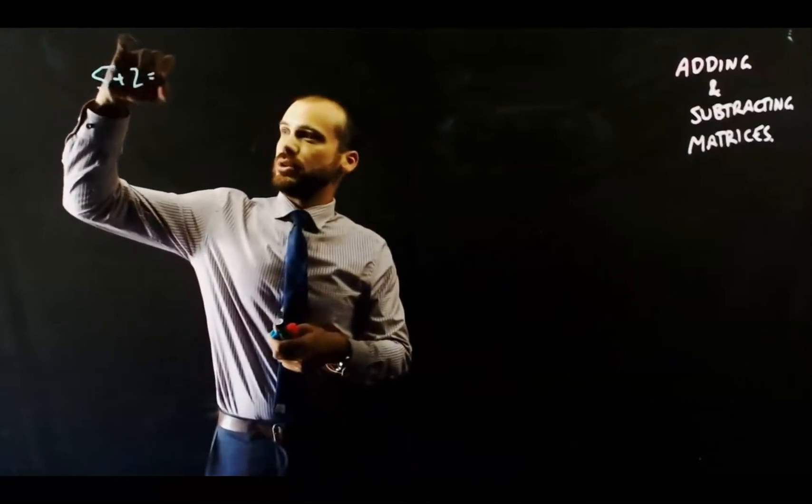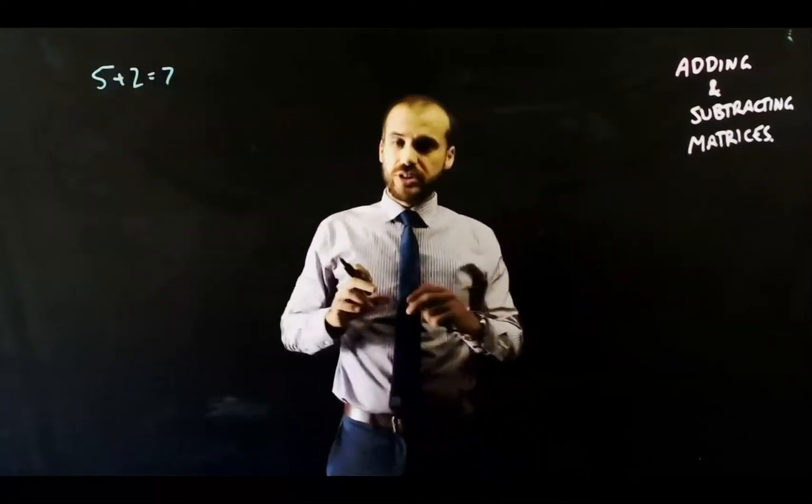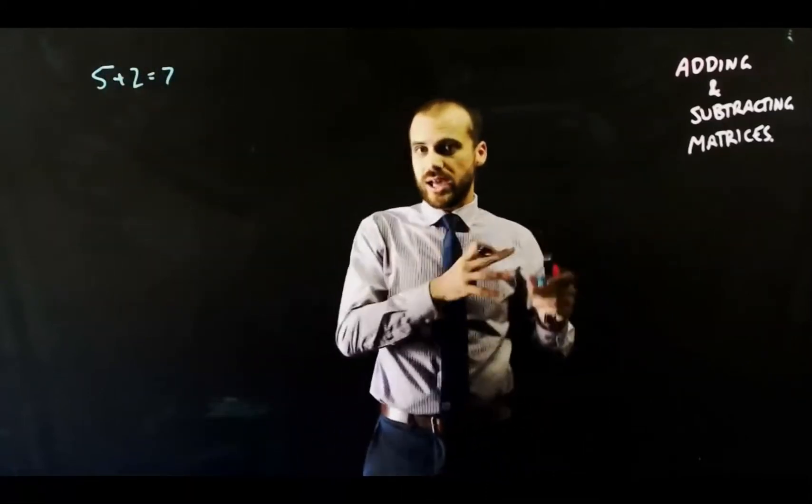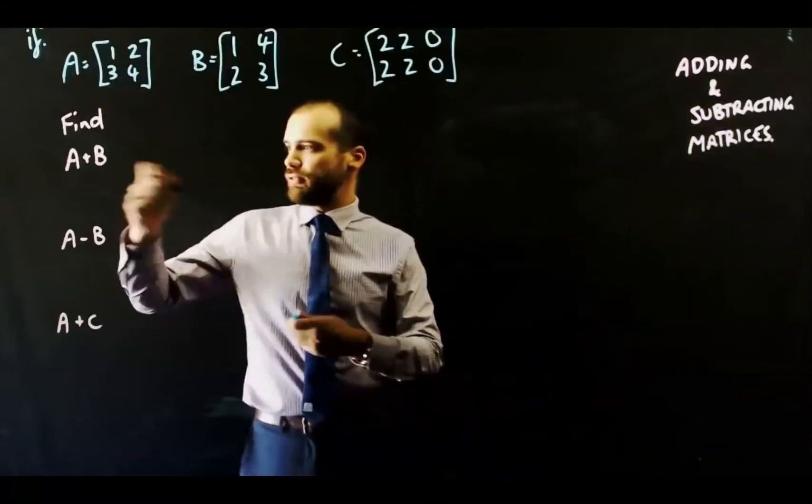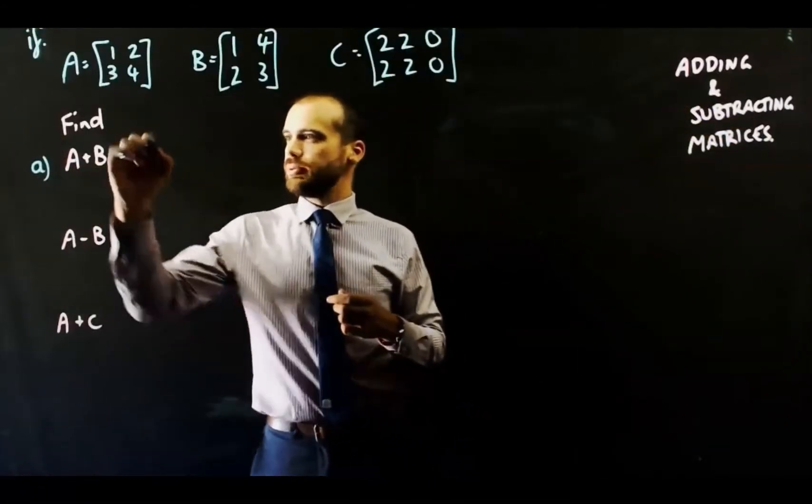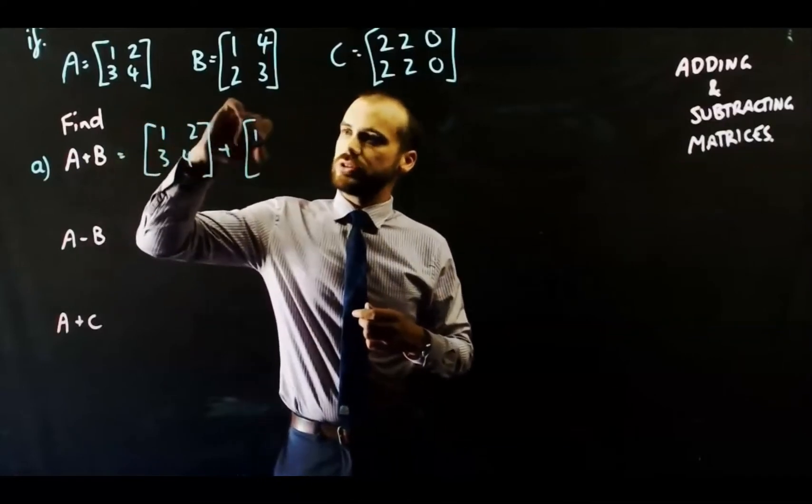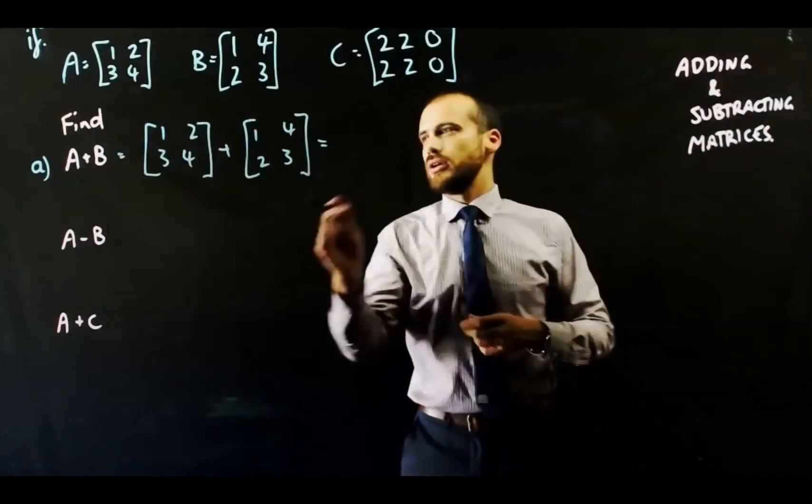All right. So now we're just adding and subtracting matrices. Same way that you can add numbers, you can add tables of numbers, which is what matrices are. So we have 3 matrices, A, B, and C. We're going to add A and B. It's really simple. You're just adding corresponding elements in the matrices.